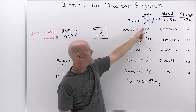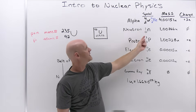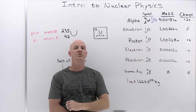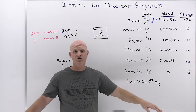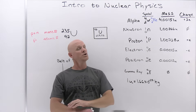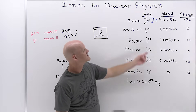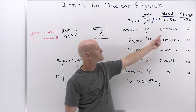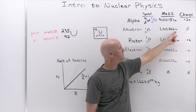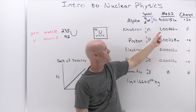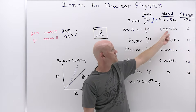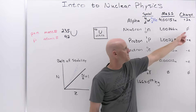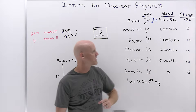Moving on to the neutron: it has a mass number of 1 and an atomic number of zero, corresponding to the fact that it has no overall charge and no protons. Its mass is 1.00866 unified mass units, which rounds to a mass number of 1. There is no overall charge on the neutron.